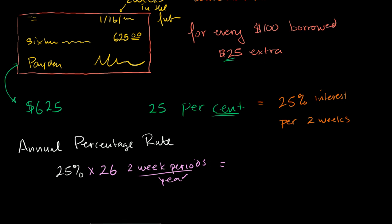So you have, I'll just multiply the numbers. 25 times 26 is equal to 650%. We're paying an APR of 650%.